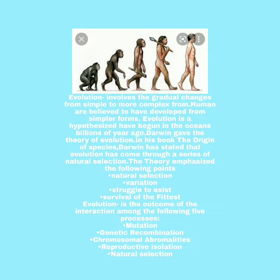Darwin gave the theory of evolution in his book, The Origin of Species. Darwin states that evolution occurred through a series of natural selection. The theory emphasizes the following points.